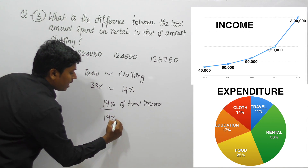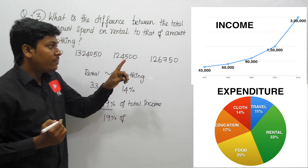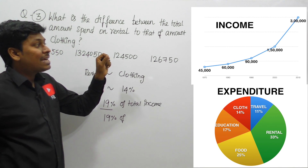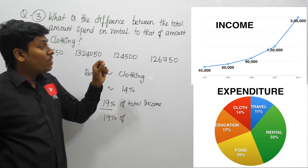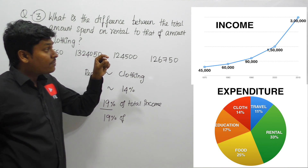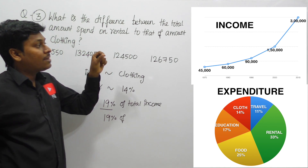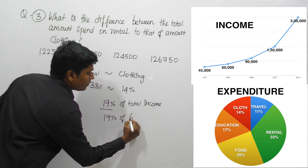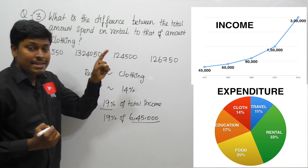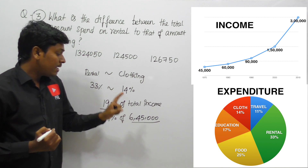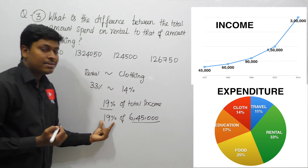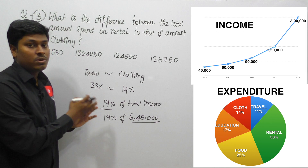Let me add all the income: 2010 = 3,00,000; 2000 = 1,50,000; total so far = 4,50,000. Plus 1990 = 90,000 → 5,40,000. Plus 1980 = 60,000 → 6,00,000. Plus 1970 = 45,000 → 6,45,000. So the total income of the family from 1970 to 2010 is 6,45,000. Now we need 19% of 6,45,000.